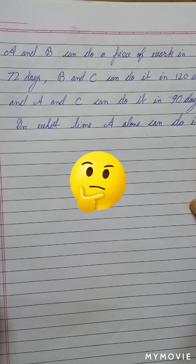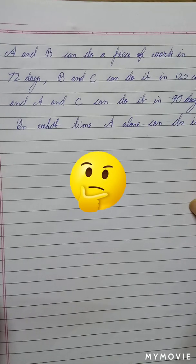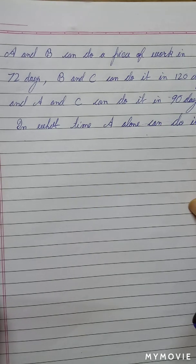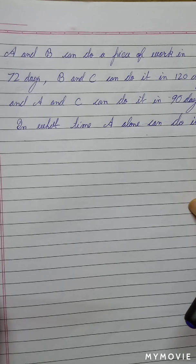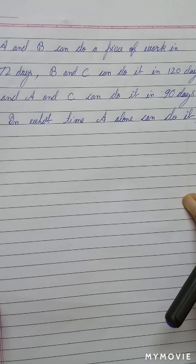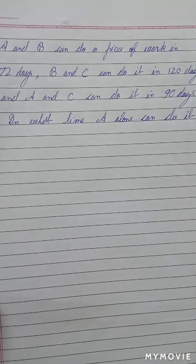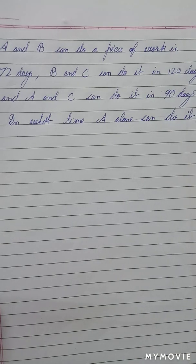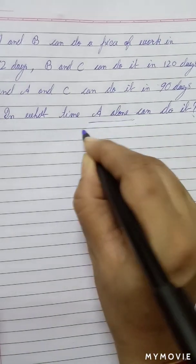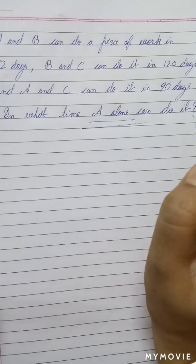A and B can do a piece of work in 72 days — that is, if A and B work together, they take 72 days to finish the work. B and C can do it in 120 days. And A and C, when they work together, take 90 days to finish the work. The question is: how much time will A alone take to do the work?